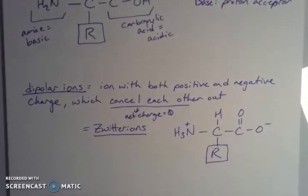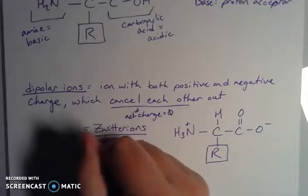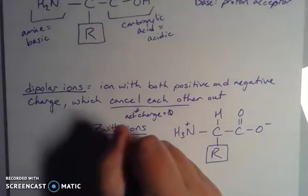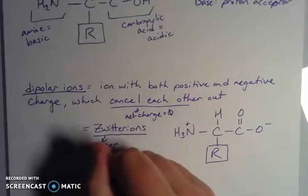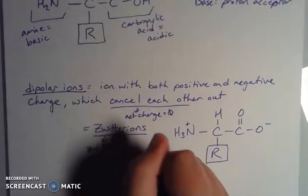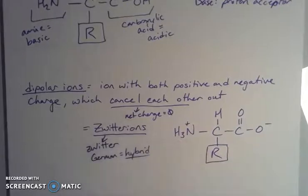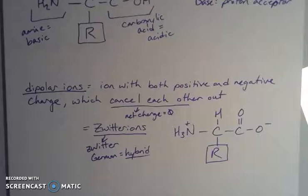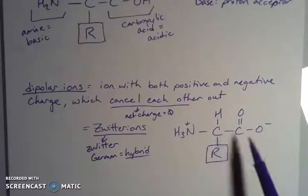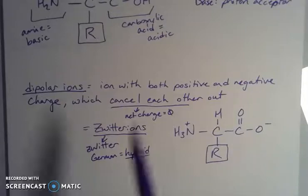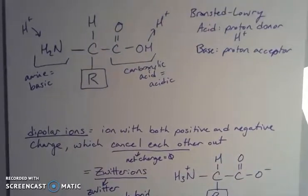You get a wacky term for a wacky thing. Zwitterion comes from German — it's pronounced something like 'Zwitter' — and it's German for hybrid. So it's a hybrid ion. These are the dipolar ions. We usually think of dipoles with polar bonds, nonmetals with other nonmetals, and here we have a group of nonmetals acting like an ion — more like a polyatomic ion — but with two charges that balance out.